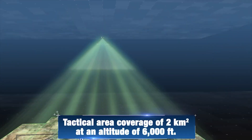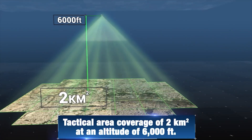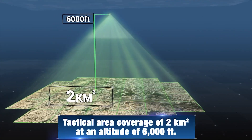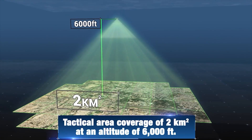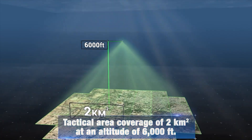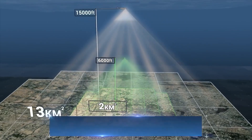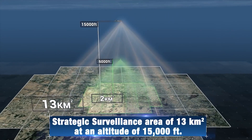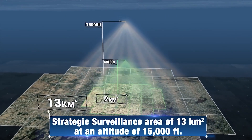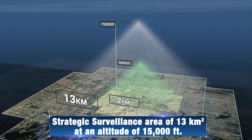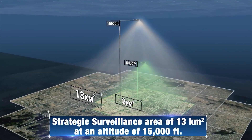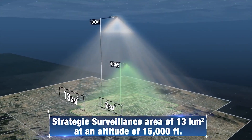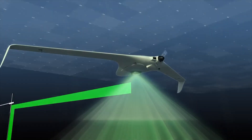A tactical altitude of 6,000 feet will provide a 2 square kilometer surveillance area. A strategic altitude of 15,000 feet will provide a 13 square kilometer surveillance area.